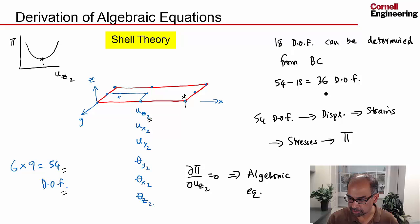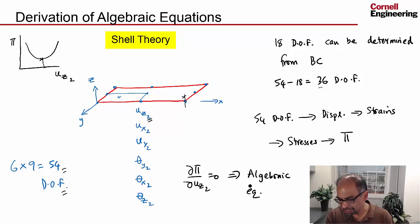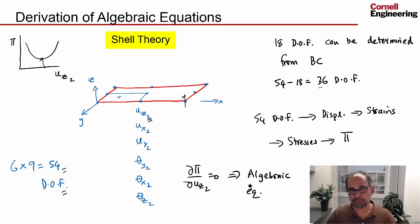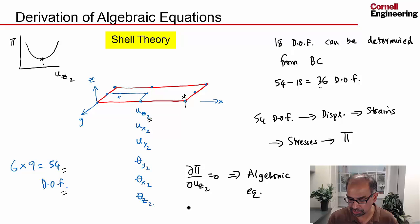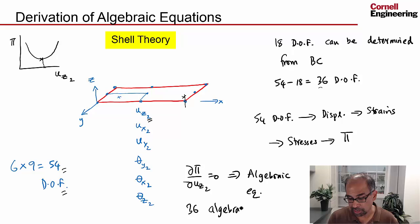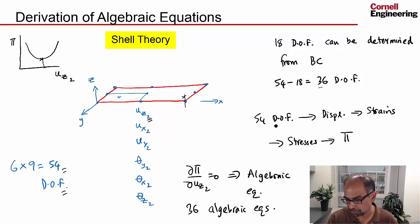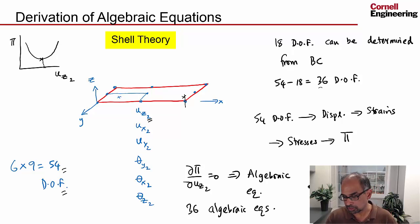Similarly, for all the other 36 unknown degrees of freedom, we can generate algebraic equations. ANSYS has automated procedures to generate these algebraic equations — a total of 36 in this particular case, and many more in the wind turbine blade case. Once you invert that system, you can find all 36 unknown degrees of freedom, and combined with the 18 from boundary conditions, you recover all 54. Then you can calculate everything else from post-processing.